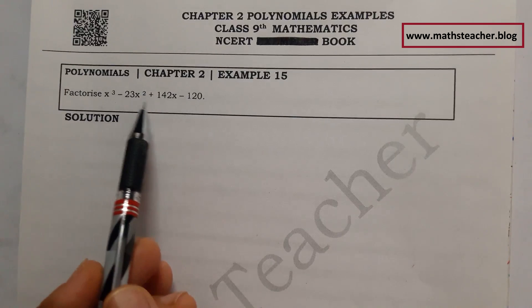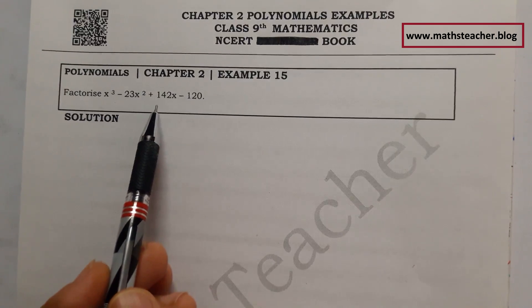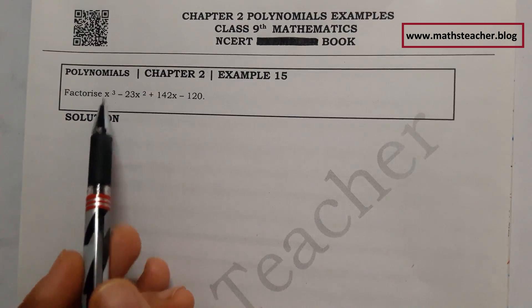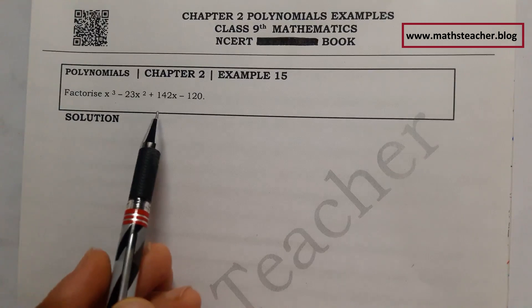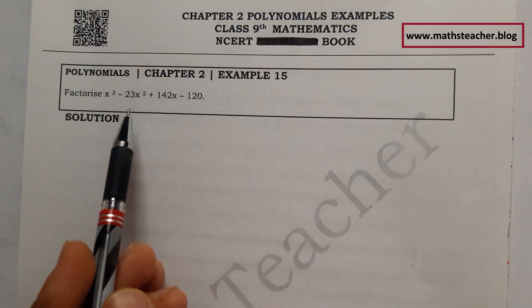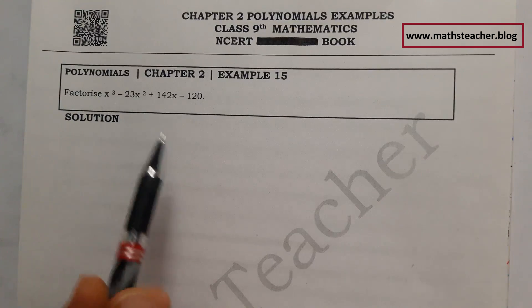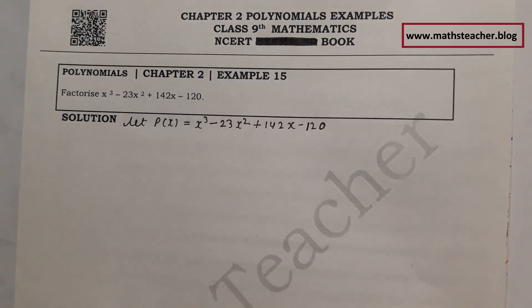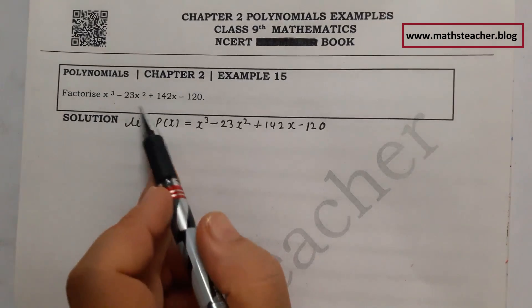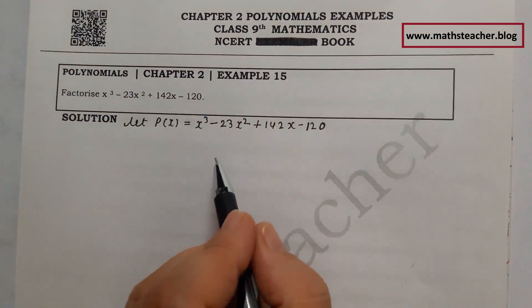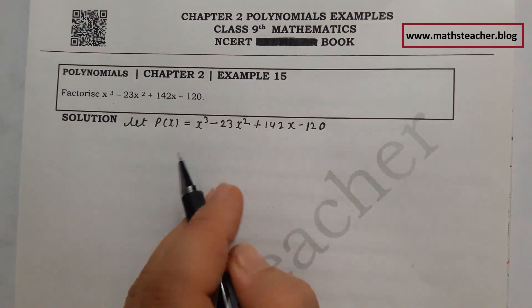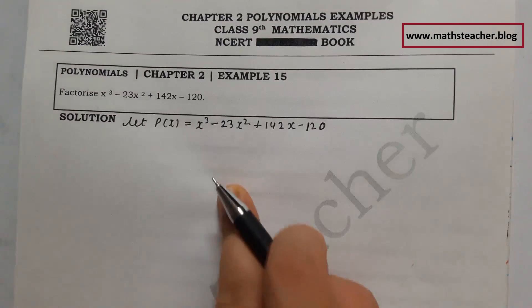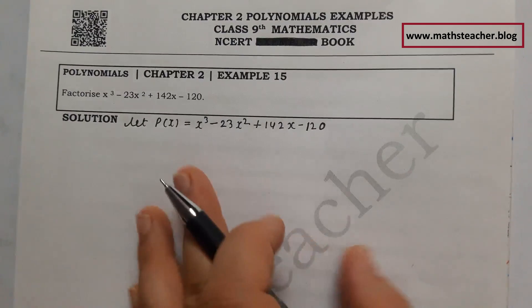I think the division method is easy to solve here, so I will use that. I have taken the first equation as p(x). Now what you have to do is find one factor using the hit-and-trial method.